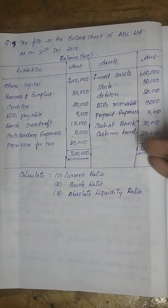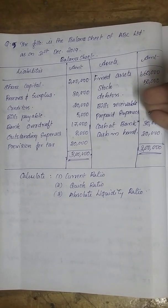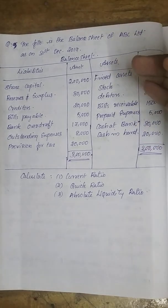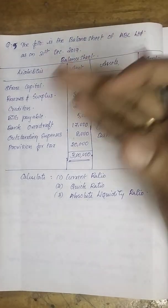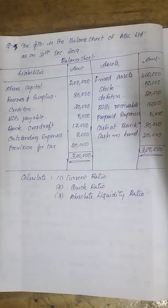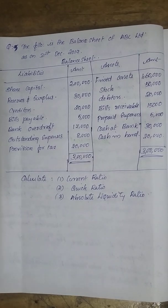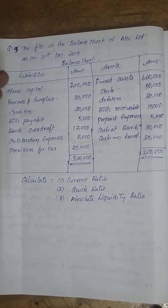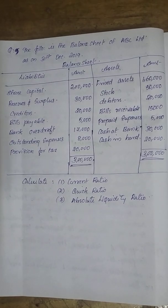The current assets include debtors, bills receivable, prepaid expenses, cash and bank, and cash in hand. On the liabilities side, we have current liabilities including creditors, bills payable, bank overdraft, outstanding expenses, provision for tax, and share capital.